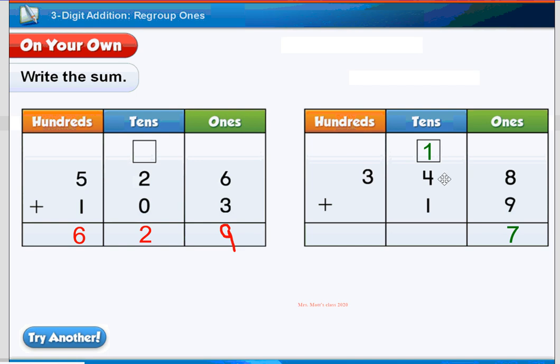Now, we're going to add 1 plus 4 plus 1. And we'll take our time, and we're going to start off with 1 plus 4. And 1 plus 4 equals 5. And then we're going to do 5 plus 1. And 5 plus 1 equals 6.